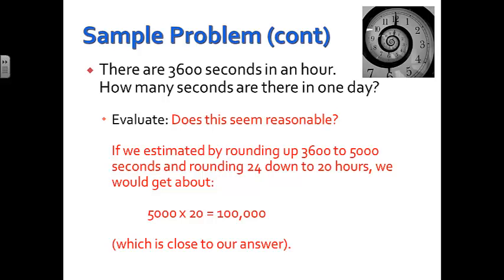Are we done? Well, we need to ask ourselves, is it reasonable? If we do an estimate by rounding 3,600 up to 5,000 and rounding 24 hours down just to 20 hours, then multiplying those together, 5,000 times 20 gives us 100,000. When we compare that to our answer, 86,400, they're fairly close together. Remember, we did do quite a bit of rounding with 3,600 changing to 5,000. So there's a little bit of a discrepancy there, but not enough to say our answer is incorrect.